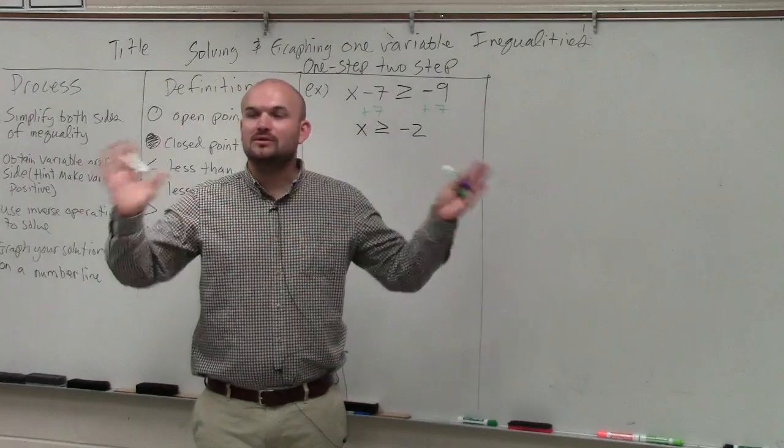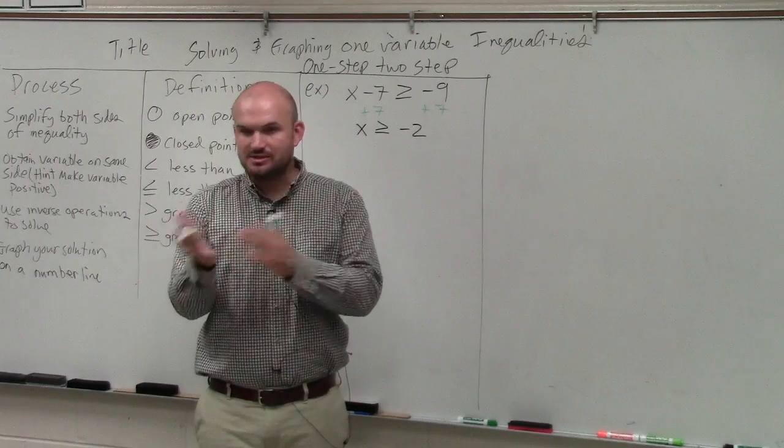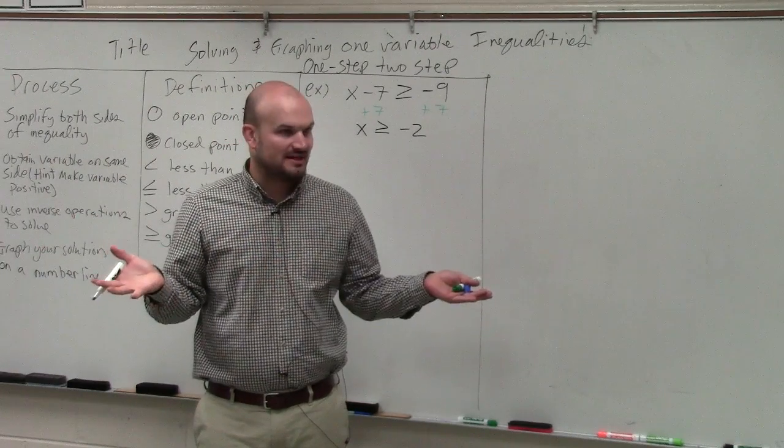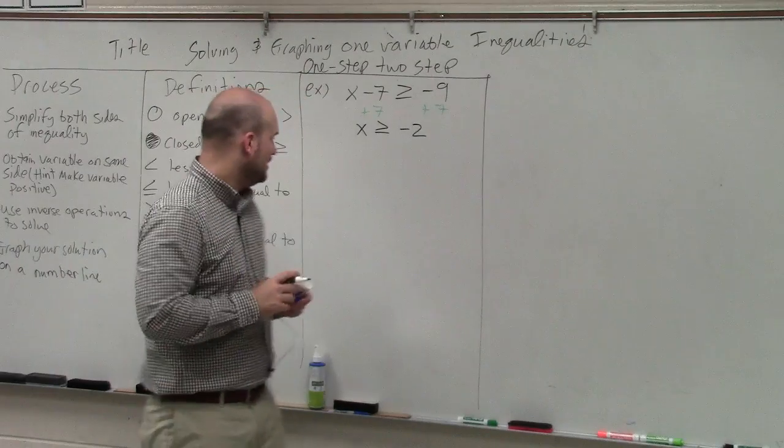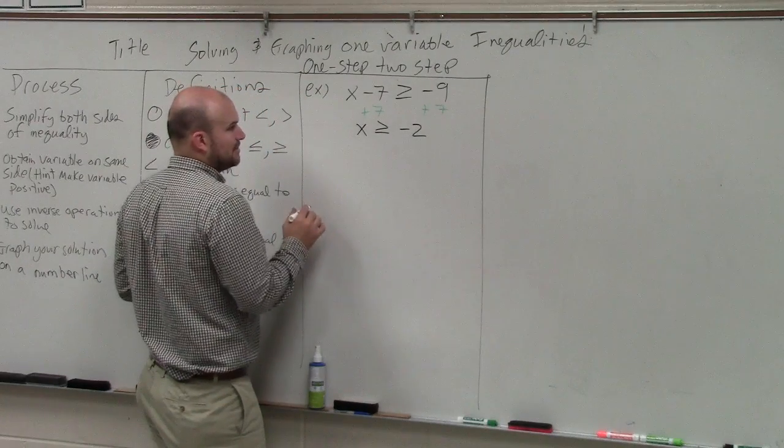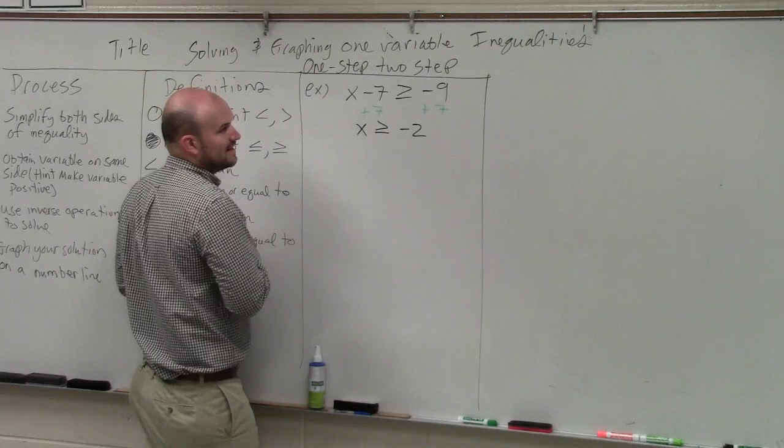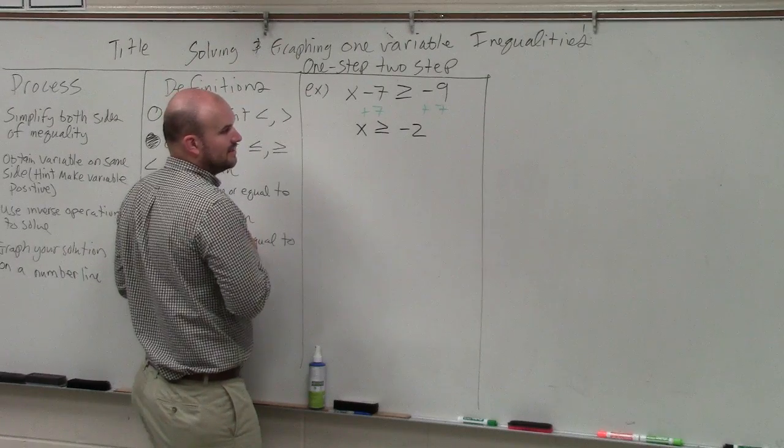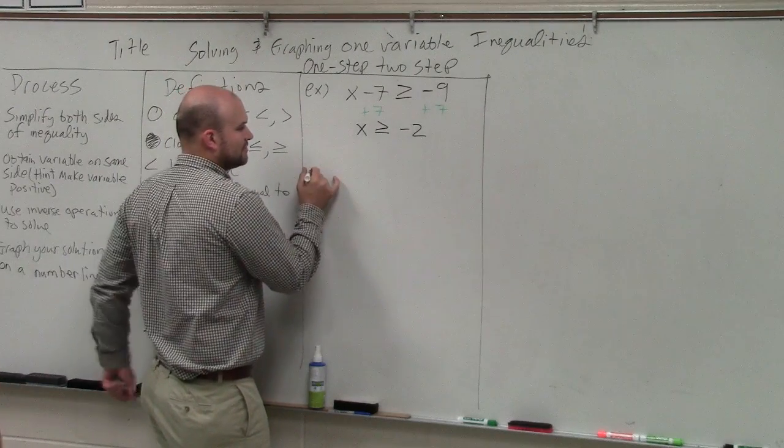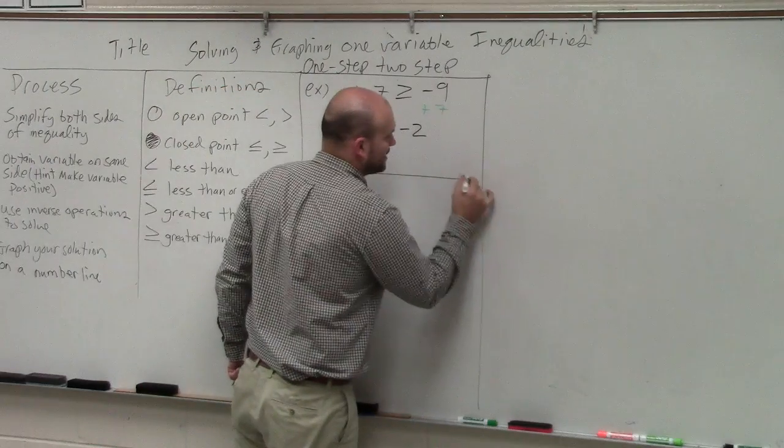Now, the only difference that we have, solving equations and inequalities is almost exactly the same, except I'll tell you guys one more thing to remember. So we have x minus 7 is greater than or equal to negative 9, x is greater than or equal to negative 2. But now what we're going to do is graph our solution. So we're going to create a number line.